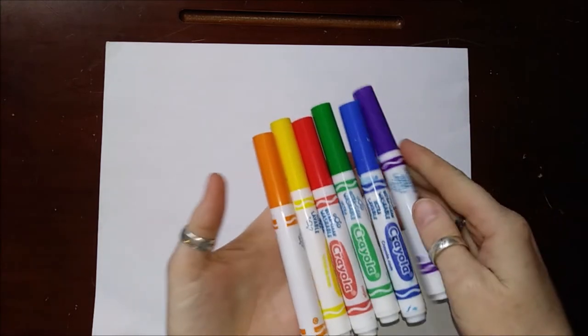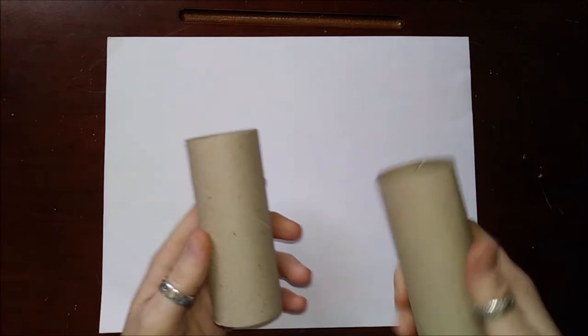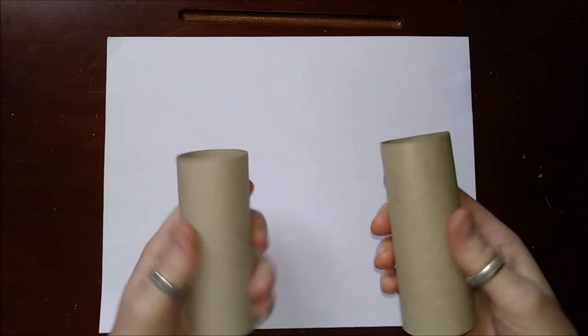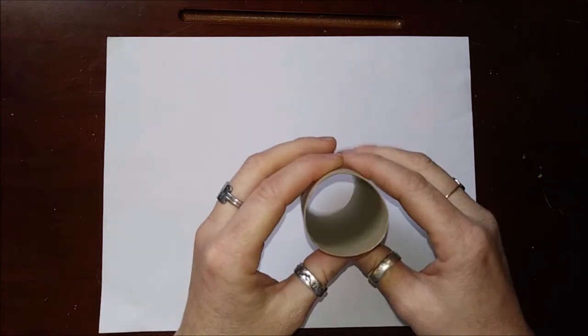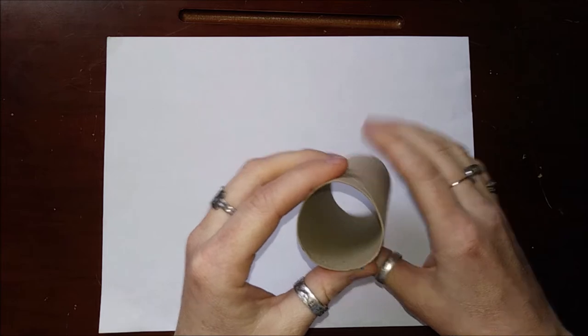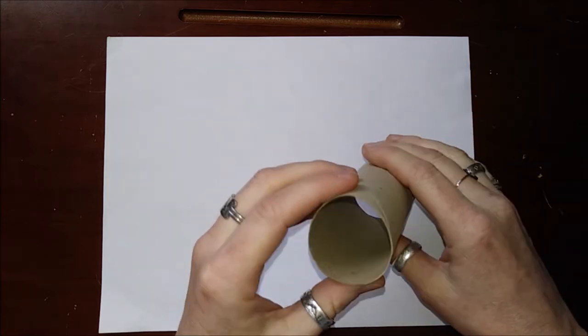All right guys, so we are going to go ahead and start with our Easter egg project. So I already wrote on the video so you know what you need. But just as a reminder, you're going to need some crayons, some markers, a piece of white paper, and you will need, if you have them, some empty paper towel or toilet paper holders. Now I am going to show you how to do this both ways. One, if you have the paper towel holder or the toilet paper roll, and I'll show you a way to do this without using one of these.